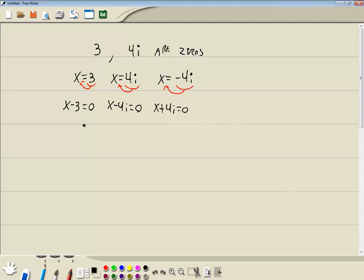Then we put them next to each other with parentheses: (X minus 3)(X minus 4i)(X plus 4i). We want to multiply these together. It's easiest to start with X minus 4i and X plus 4i because they're conjugates. Conjugates have the same first part, same last part, but different signs in the middle.